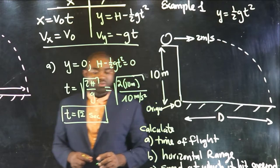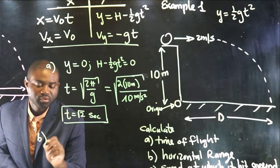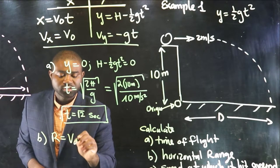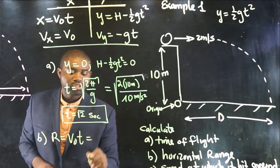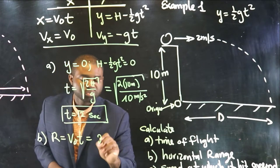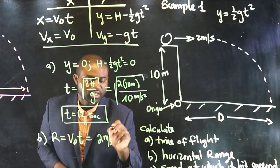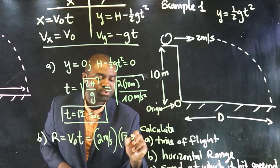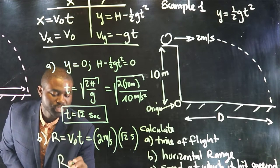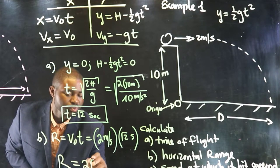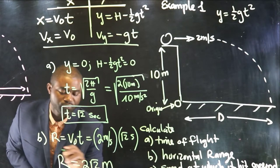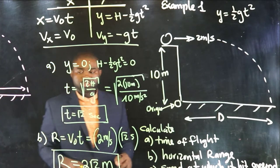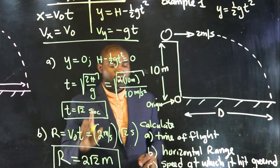The horizontal range, d, is an x distance. So, it's going to be equal to v naught t, which is equal to v naught is 2 meters per second. Since t is the square root of 2 seconds, that would mean that the range is equal to 2 root 2 meters. So, this gives us our range.